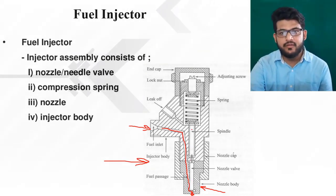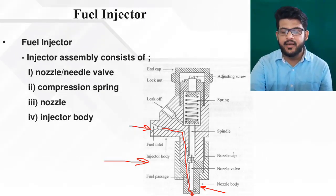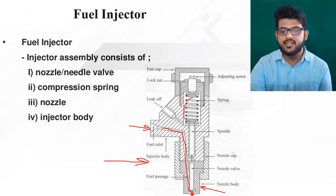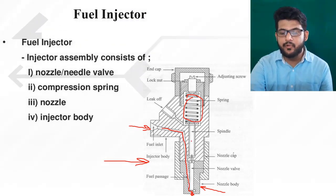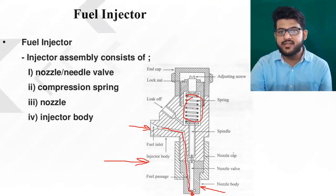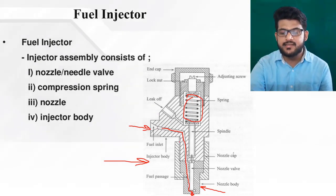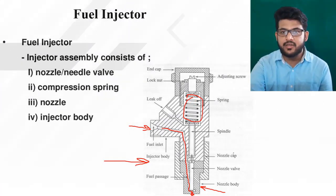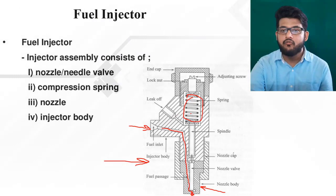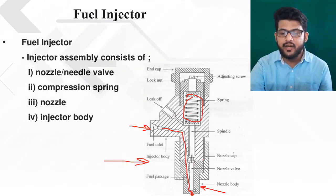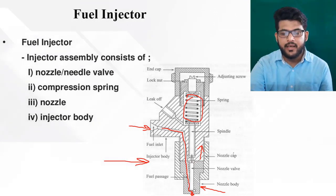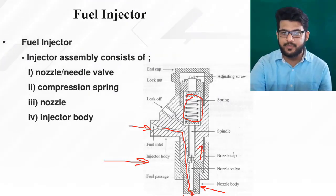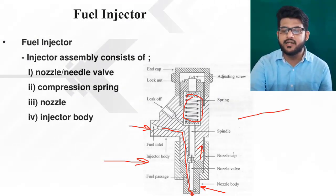Reviewing how the nozzle valve works: fuel comes through the fuel line and exerts pressure on the needle valve. This needle valve is supported by a spring. When fuel enters and exerts pressure against the spring force, once the fuel pressure exceeds the spring force, the needle valve is lifted upward, opening the hole, and injection takes place. This is the main working principle of the fuel injector used in many vehicles.